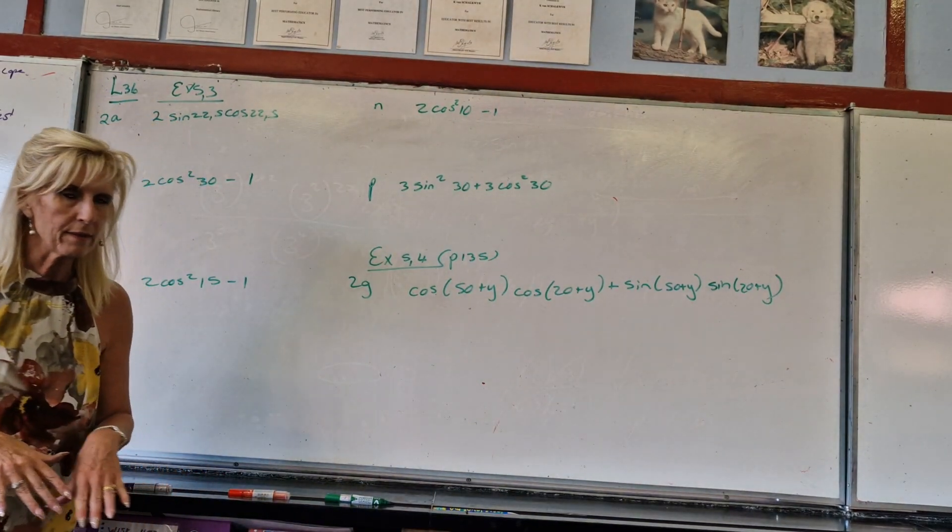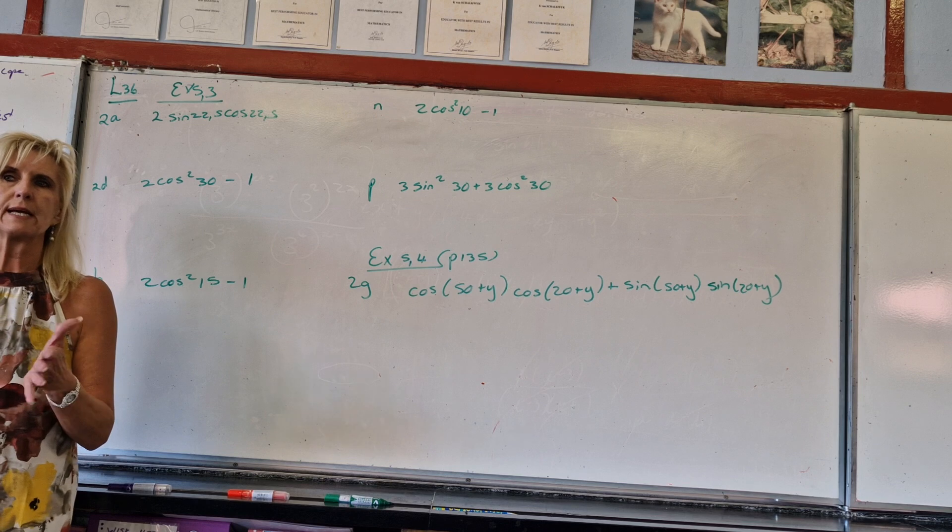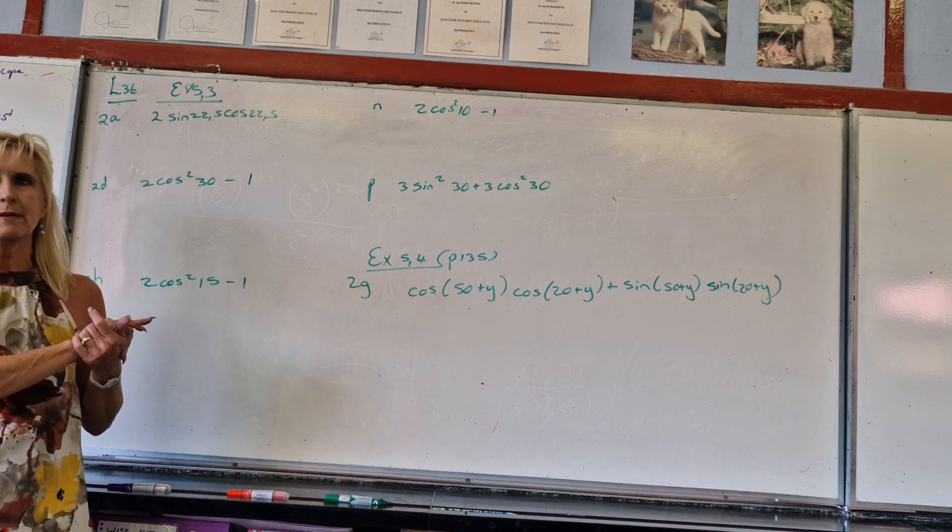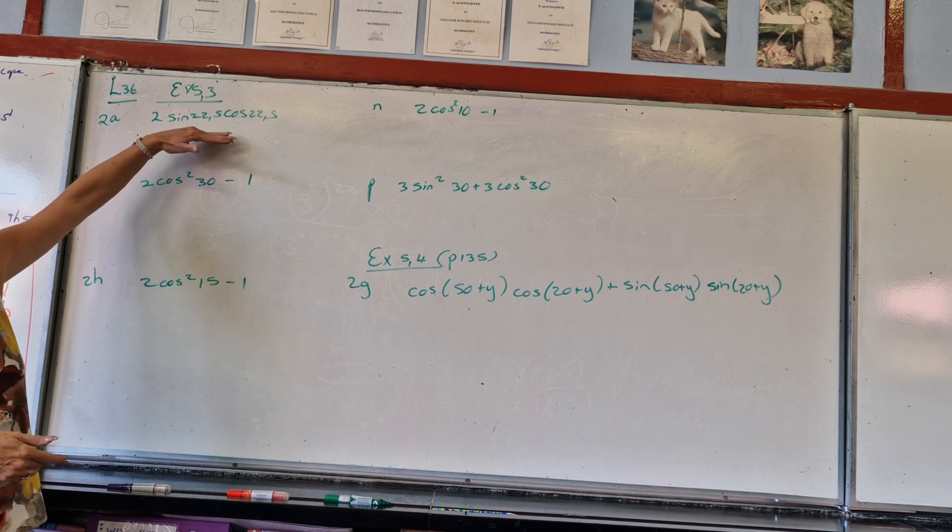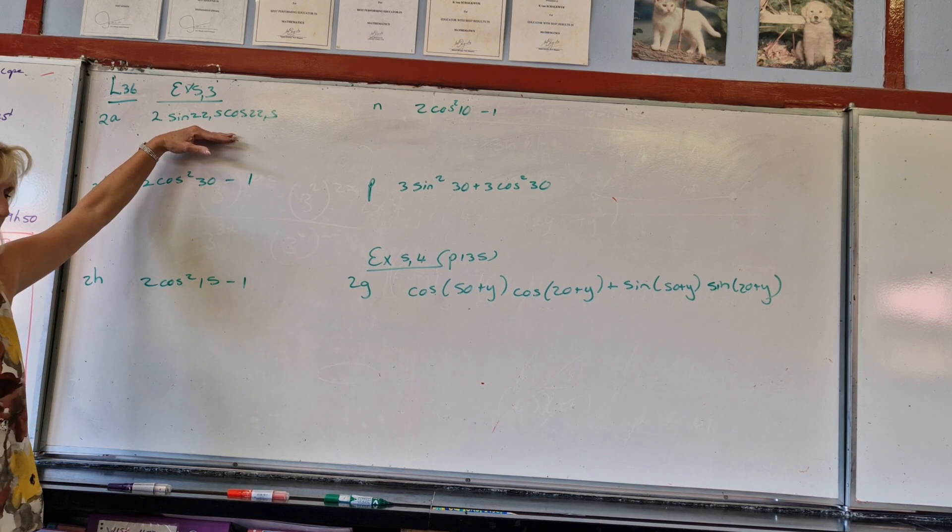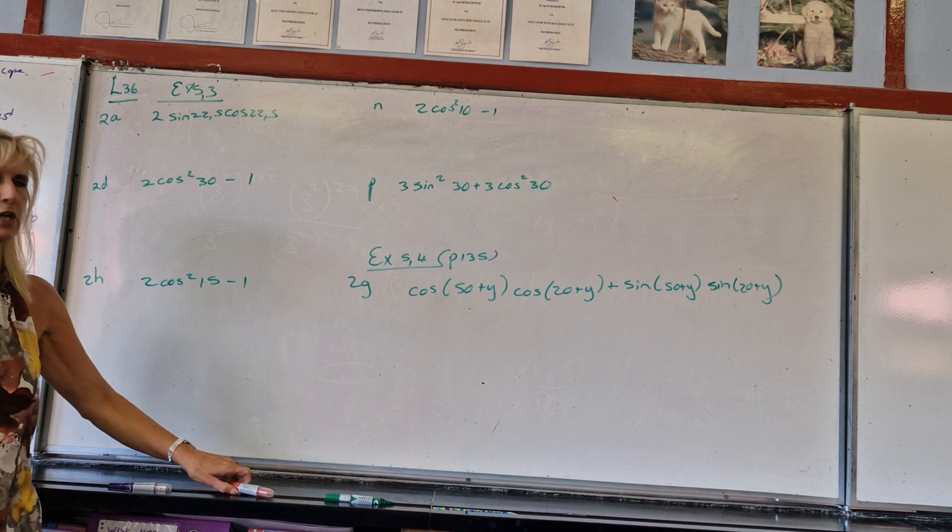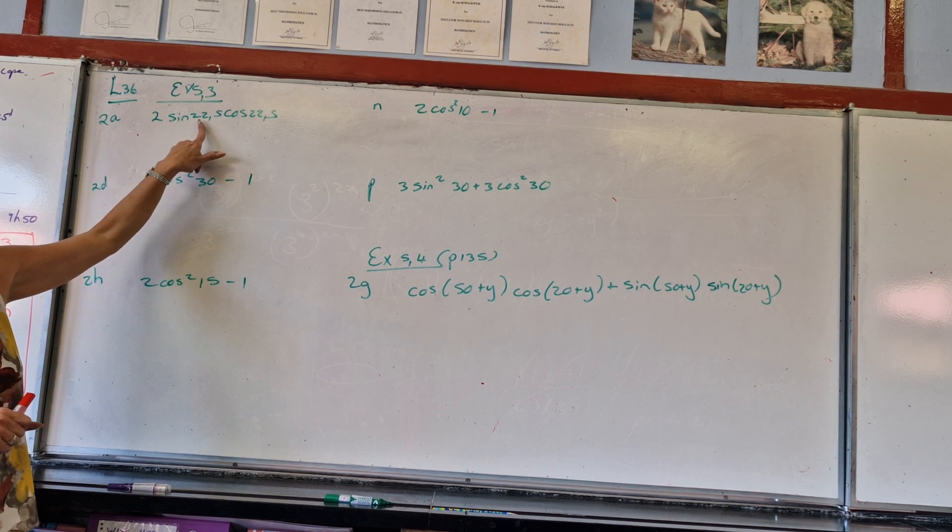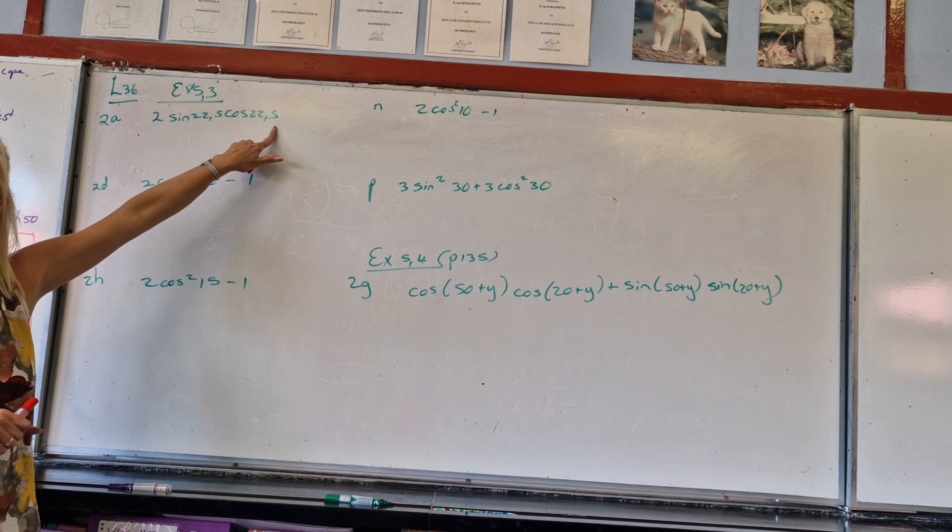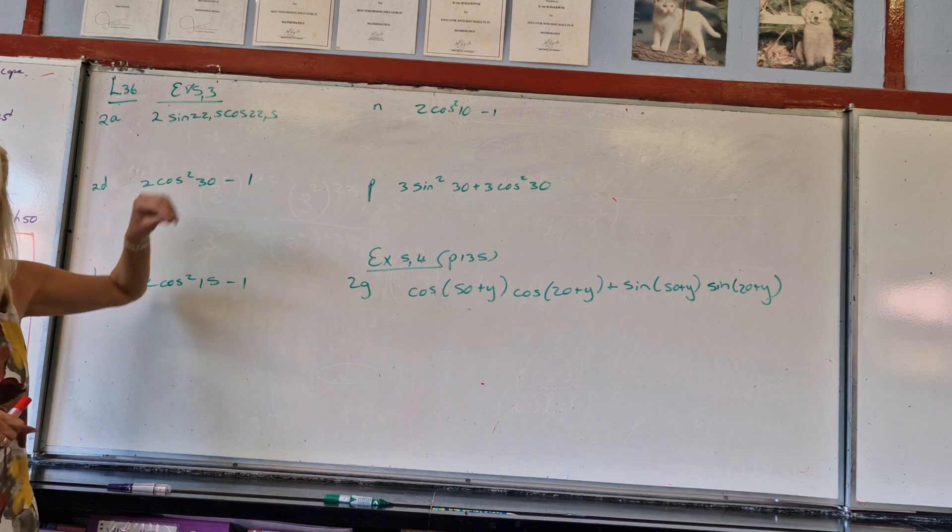Okay, so we are busy with compound angles and double angles. Now I'm not going to write them every time on the board, but things are going to happen like in the next step we're going to say simplify this to one trigonometric ratio. What would be your answer? What are we seeing? 2sin(something) and cos(something) the same. This is a what identity?